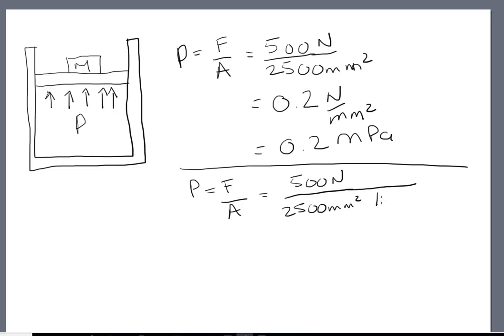If we multiply by 1 meter squared over 1 meter squared, this would still be 2500 millimeters. But 1 meter squared is equivalent to 1000 millimeters all squared.